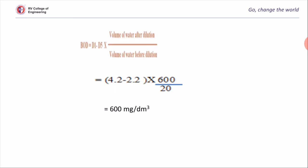So we already know the formula. BOD: D1 we already calculated, D5 just now we calculated. Volume of water after dilution is 600 and volume of water before dilution is 20. By substituting these values, you will get 60 mg per dm cube.